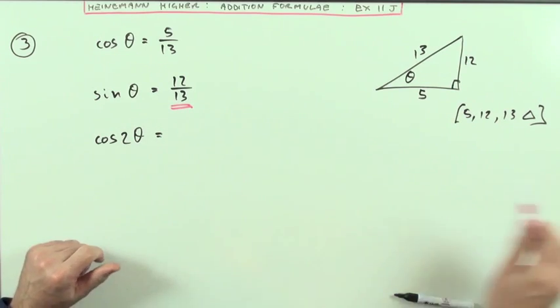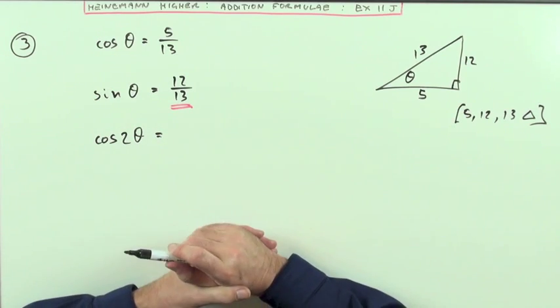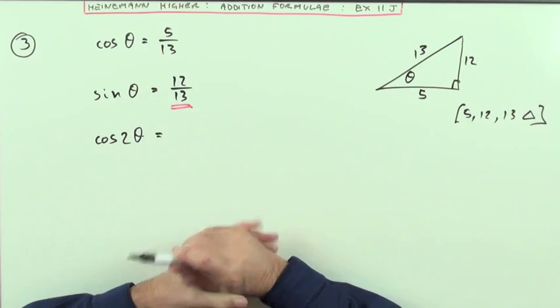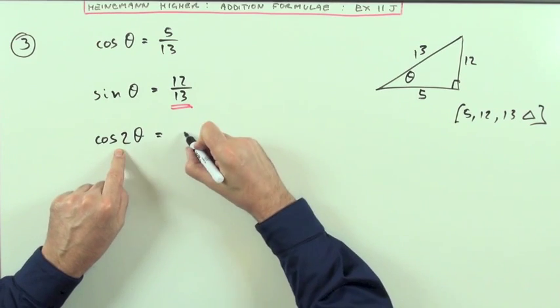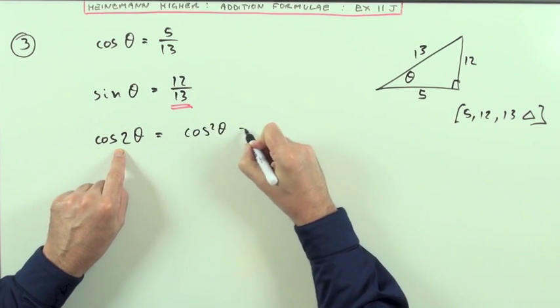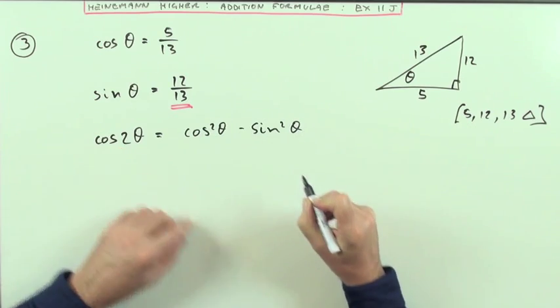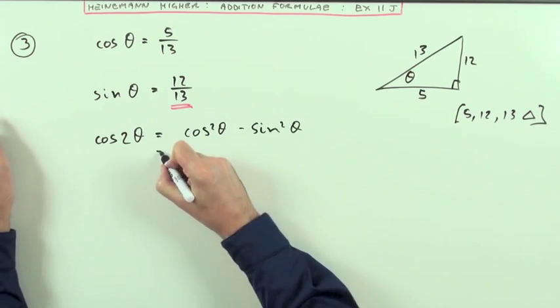The problem with the cosine is there's several ways of working it out. There's three ways of working it out depending on which variety. The initial variety is cos squared theta minus sine squared theta. We'll just do all three ways.